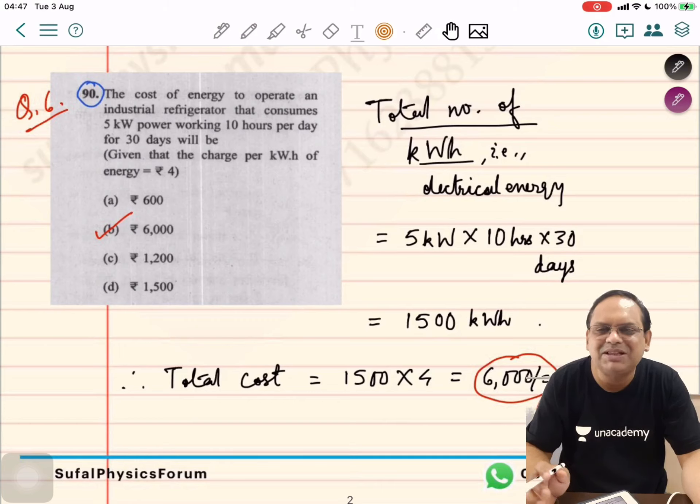Power consumption means electric energy. In common language we call it power consumption, but in physics it is consumption of electrical energy. One unit of kilowatt hour is 3.6 times 10 to the power 6 joules. So the total number of kilowatt hours is energy, which means power times time.